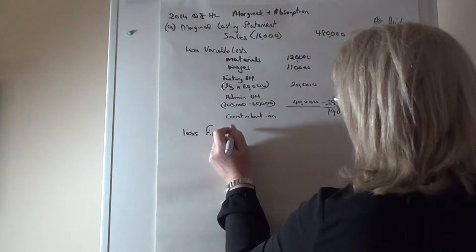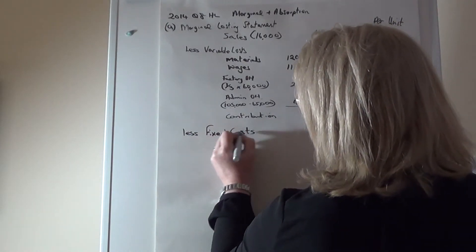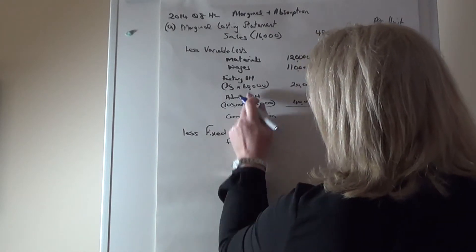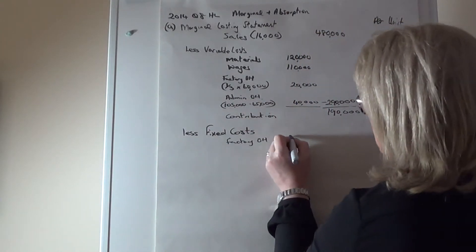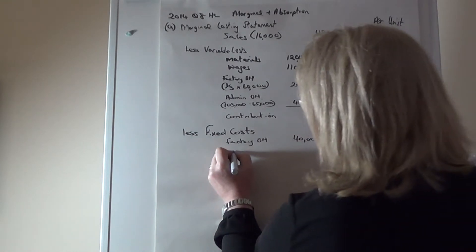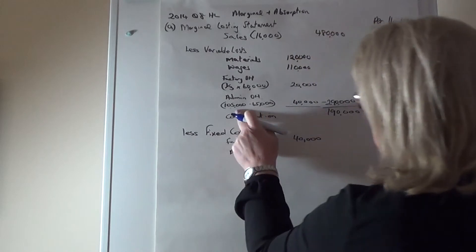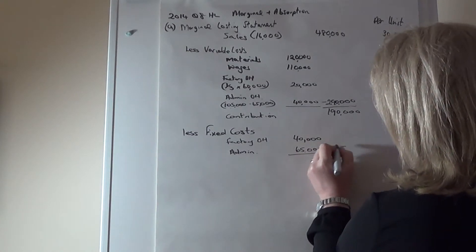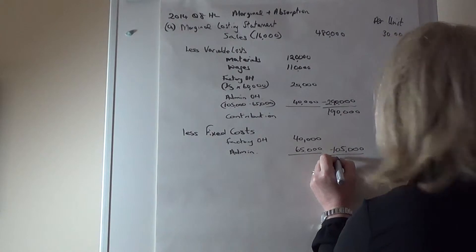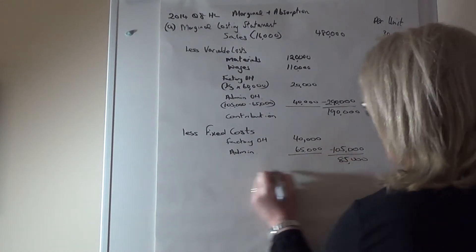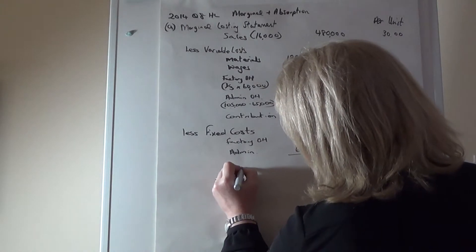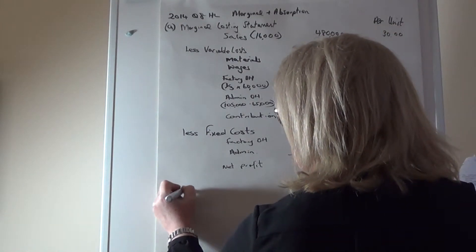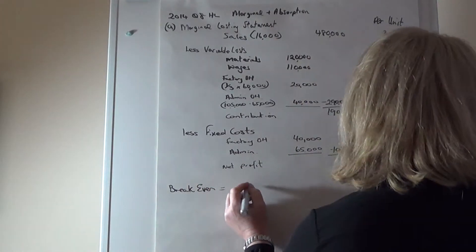Continuing with fixed costs: factory overheads are 40,000 (the two-thirds fixed portion of the 60,000) and administration fixed costs are 65,000, giving total fixed costs of 105,000. Taking that out leaves a profit of 85,000.